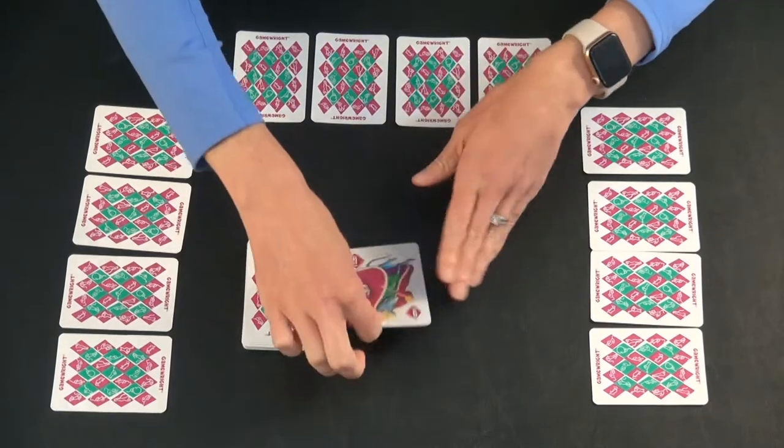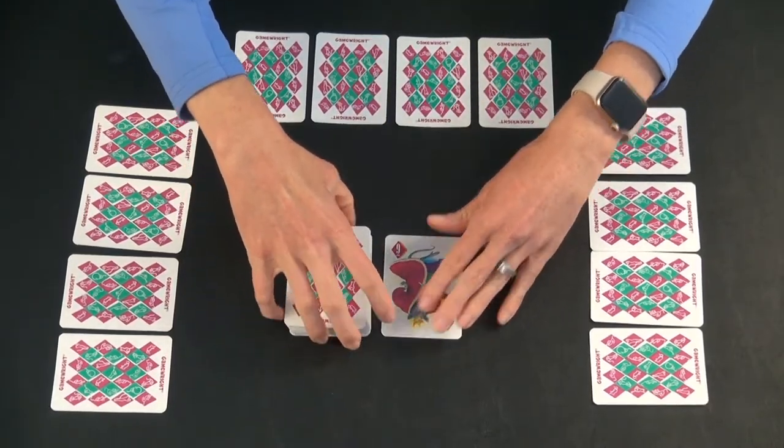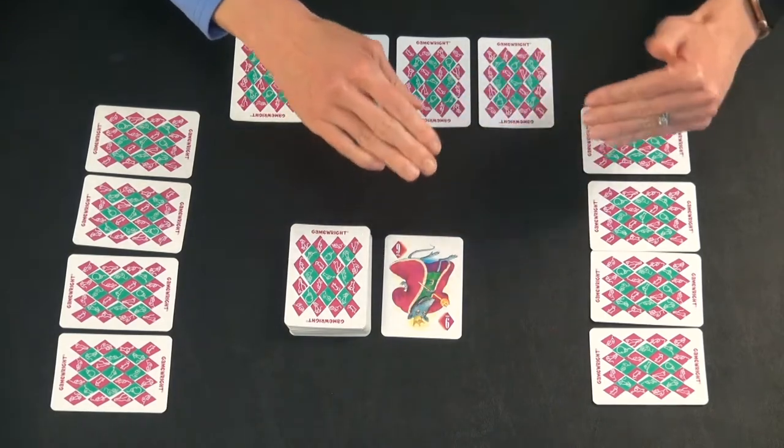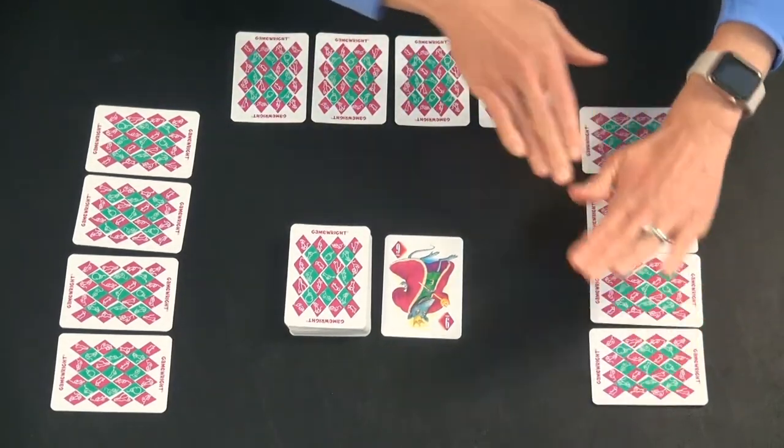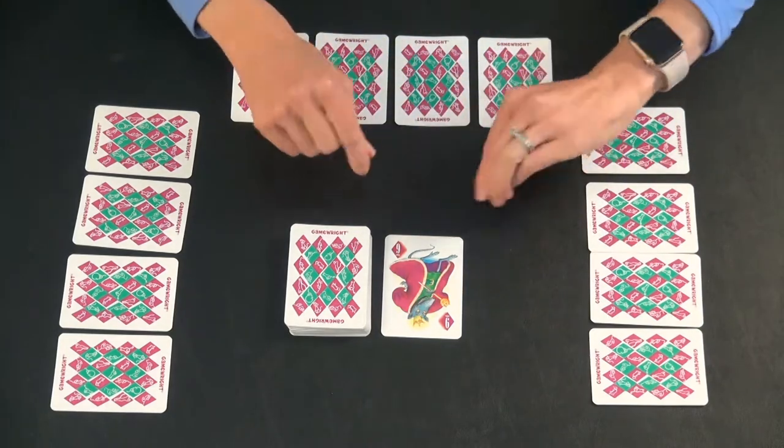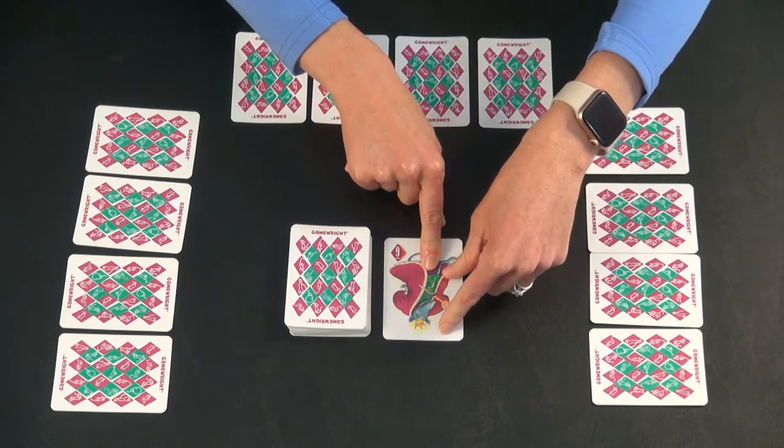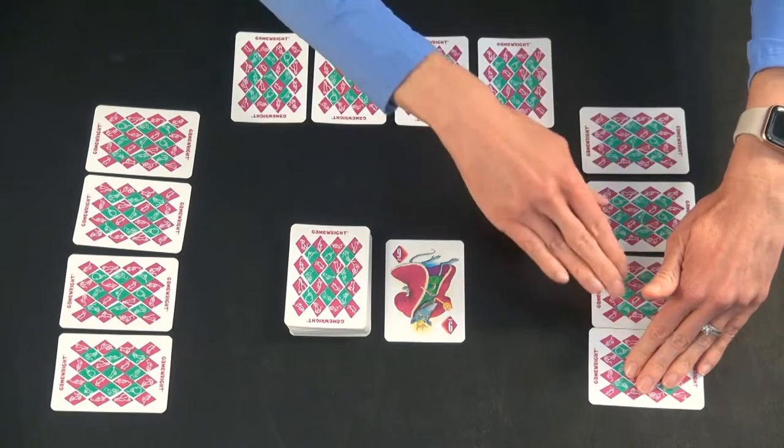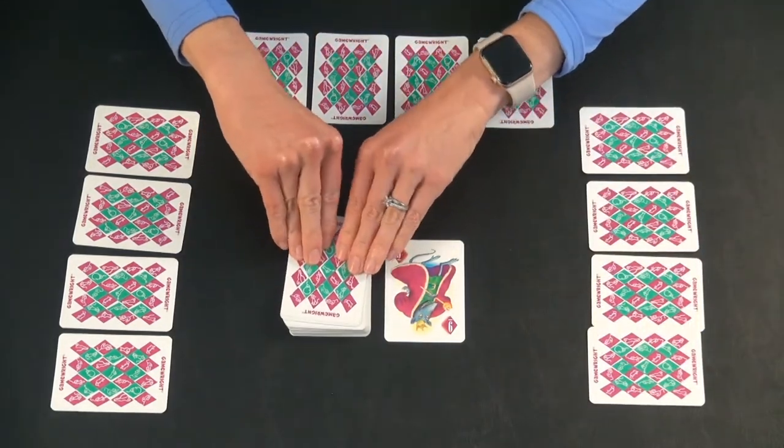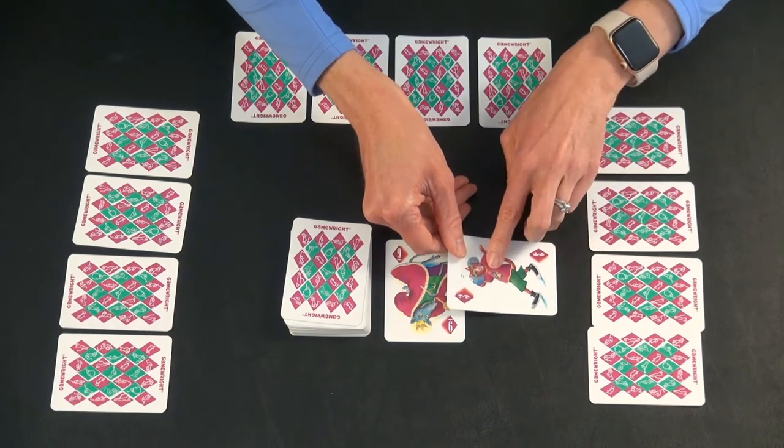So to begin, the dealer puts the top card out to begin the discard pile, and what you do then on your turn, let's say this person was the dealer, the person to the left of the dealer goes first, and on your turn you have a choice. You may either pick up the card from the discard pile, and then you have to replace it with one of the cards over here, or you can take a card from the draw pile, and then you have a few choices for actions with this card.